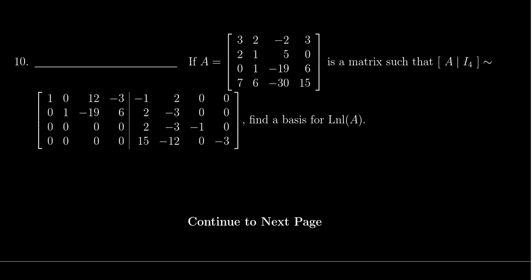We are also given the following useful information that A augment the identity will row reduce to the following 4x8 matrix right there. It's a 4x4 matrix augment with a 4x4 matrix and we're asked to find a basis for the left null space of A.